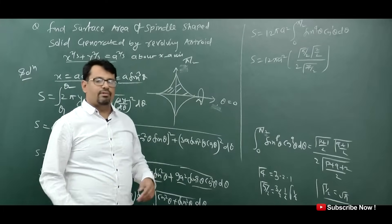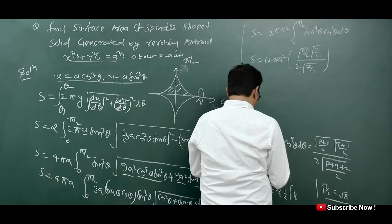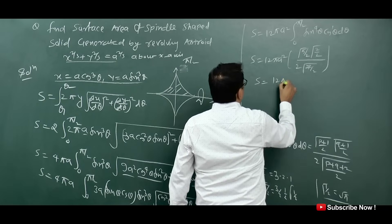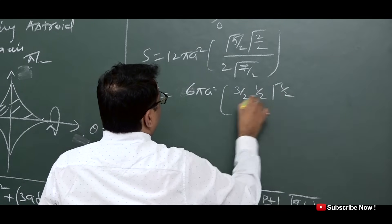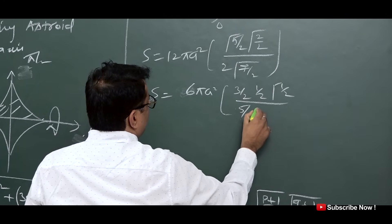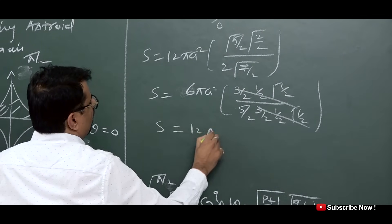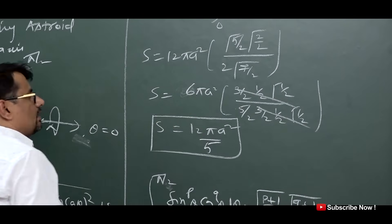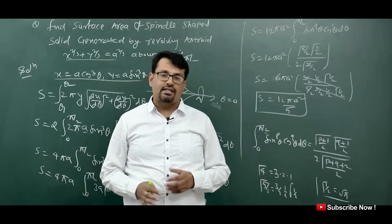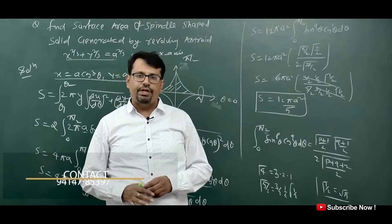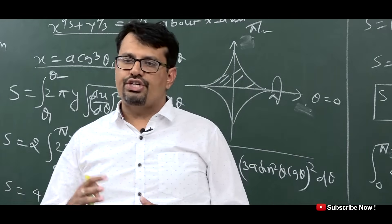Substituting: S = 6πa² × [Γ(5/2)·Γ(1)] / [Γ(7/2)]. The Γ(3/2)(1/2)Γ(1/2) terms cancel, giving S = 12πa²/5. This is the answer. So this is how we solve this question. Students, keep watching my videos and share with your friends. Comment if you liked it. Thank you so much for watching. The next topic will be change of order of integration in double integration.